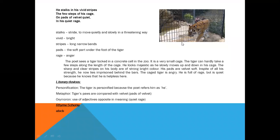The poet sees a tiger locked in a concrete cell in the zoo. It is a very small cage. The tiger can hardly take a few steps along the length of the cage. He looks majestic as he slowly moves up and down the cage. The sharp and clear stripes on his body are of strong, bright color. His pads are velvet soft. In spite of all his strength, he now lies in prison behind the bars. The caged tiger is angry, he's full of rage, but is quiet because he knows that he is helpless here.